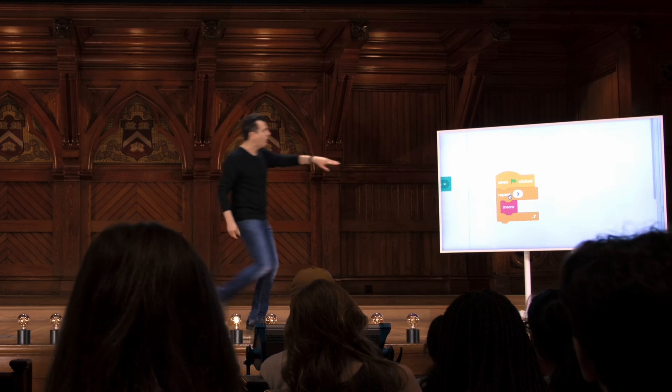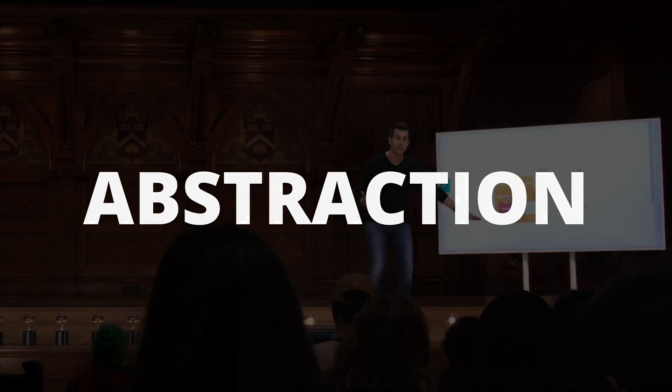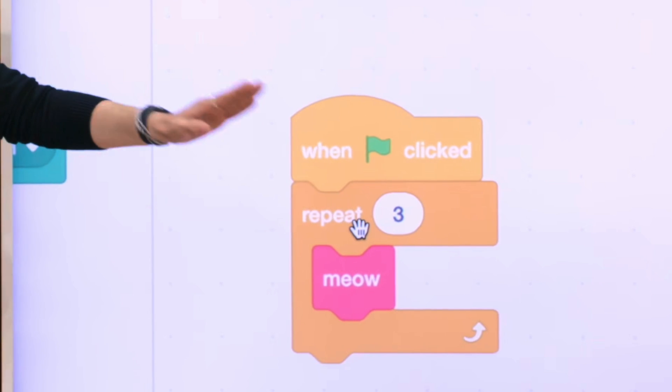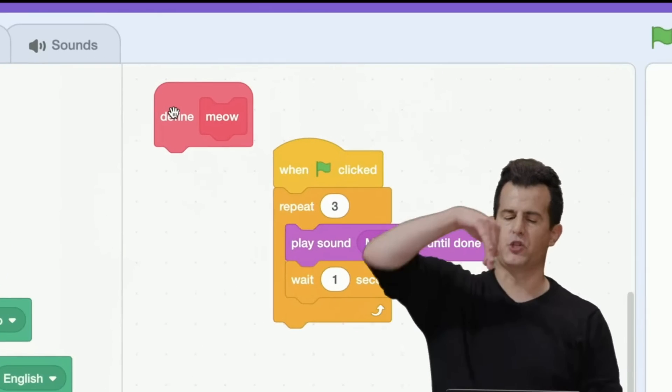Professor Malan answers this by introducing the idea of abstraction through a special type of Scratch block, a bright pink square called a custom block. But before that,